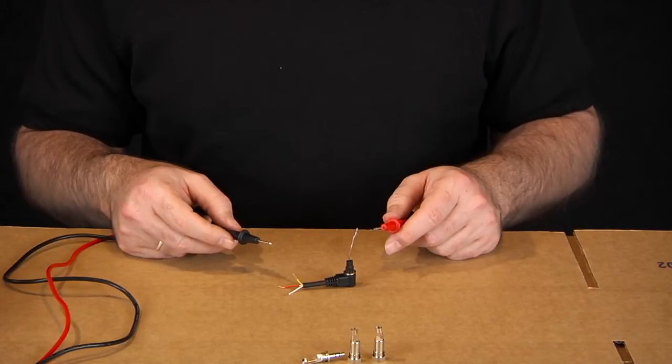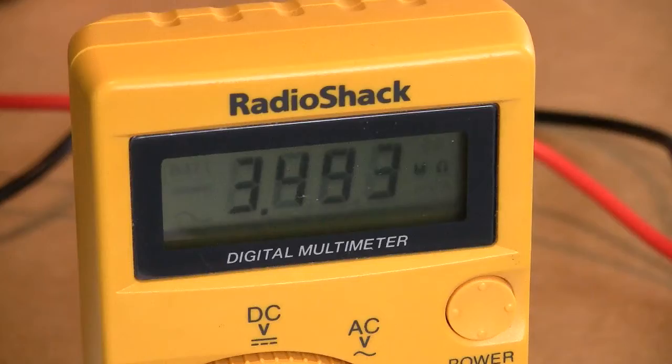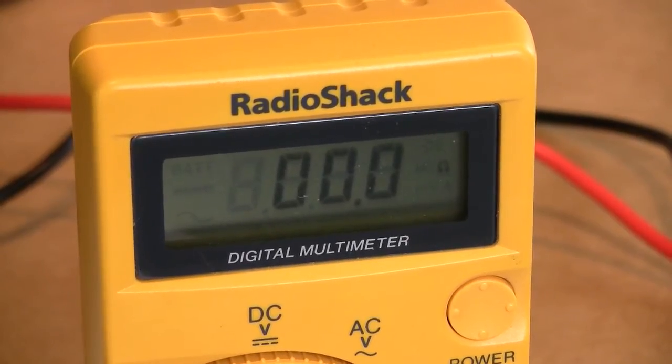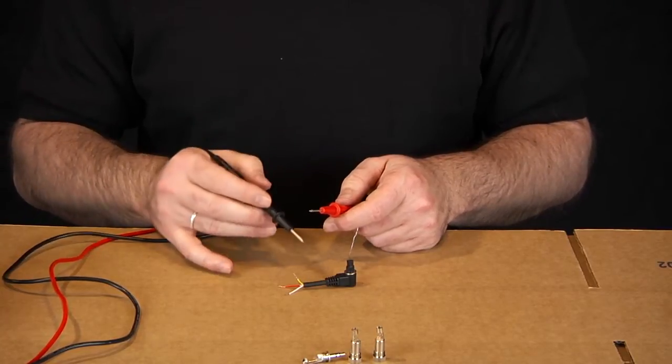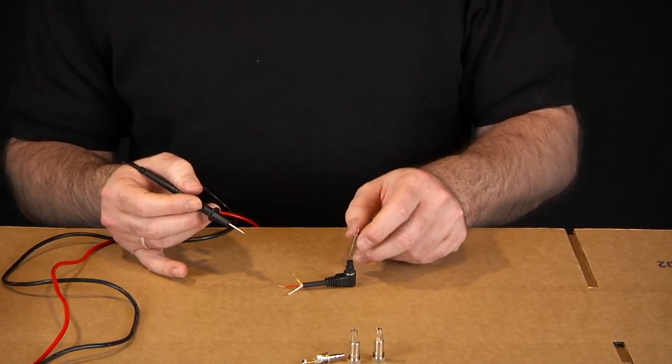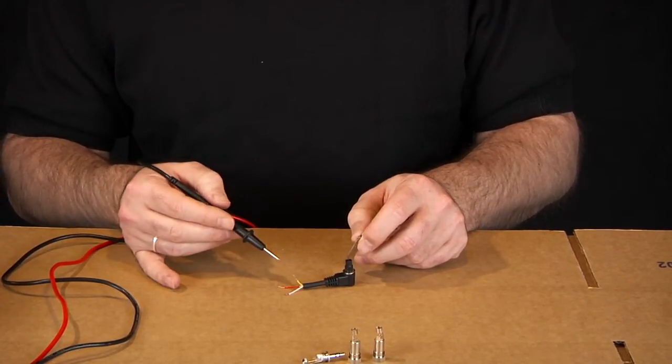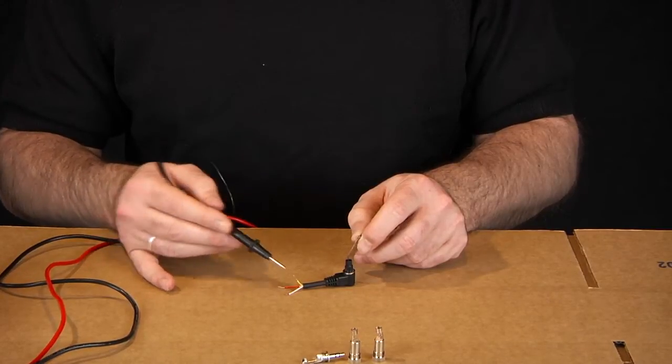You're going to want to set your multimeter up so you can read a dead short. The way to do that is you touch the two ends together and the multimeter should read zero. And that's how we're going to test this plug for the pin configuration. I'm going to put one end to the wire that's in the pin hole and then I'm going to test each one of the three wires.